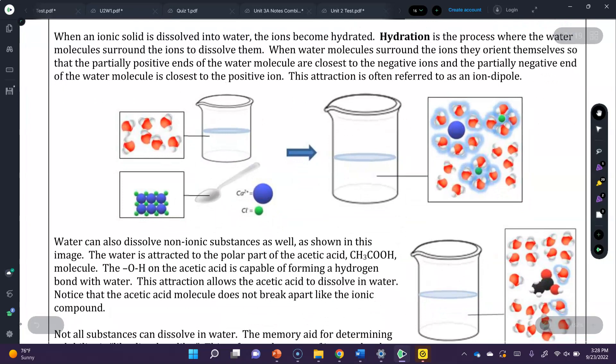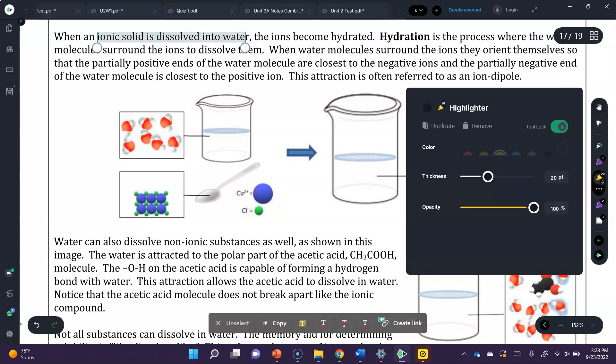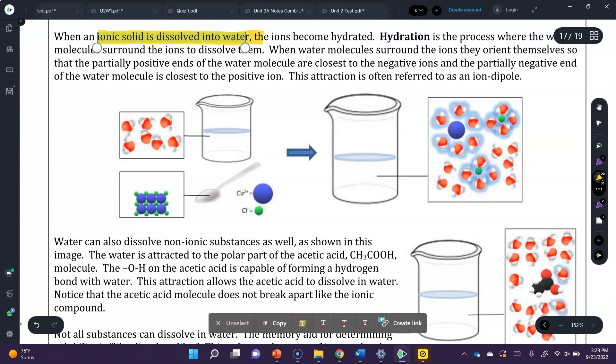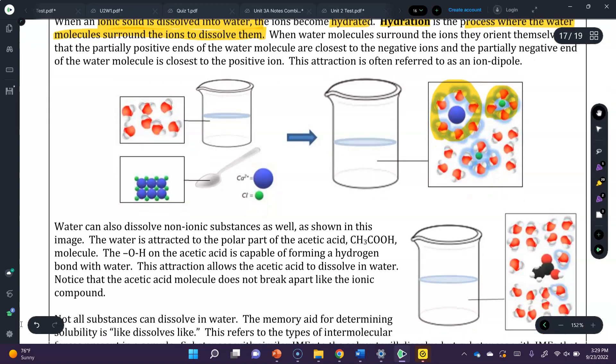When an ionic compound is dissolved into water, the ions become hydrated. Hydration is the process where the water molecules surround the ions to dissolve them. We call this a hydration shell, where the water molecules orient according to their dipole around the cations and anions to dissolve it. This happens and successfully dissolves when the solvent-to-solute interactions are strong. This attraction is referred to as an ion-dipole interaction.